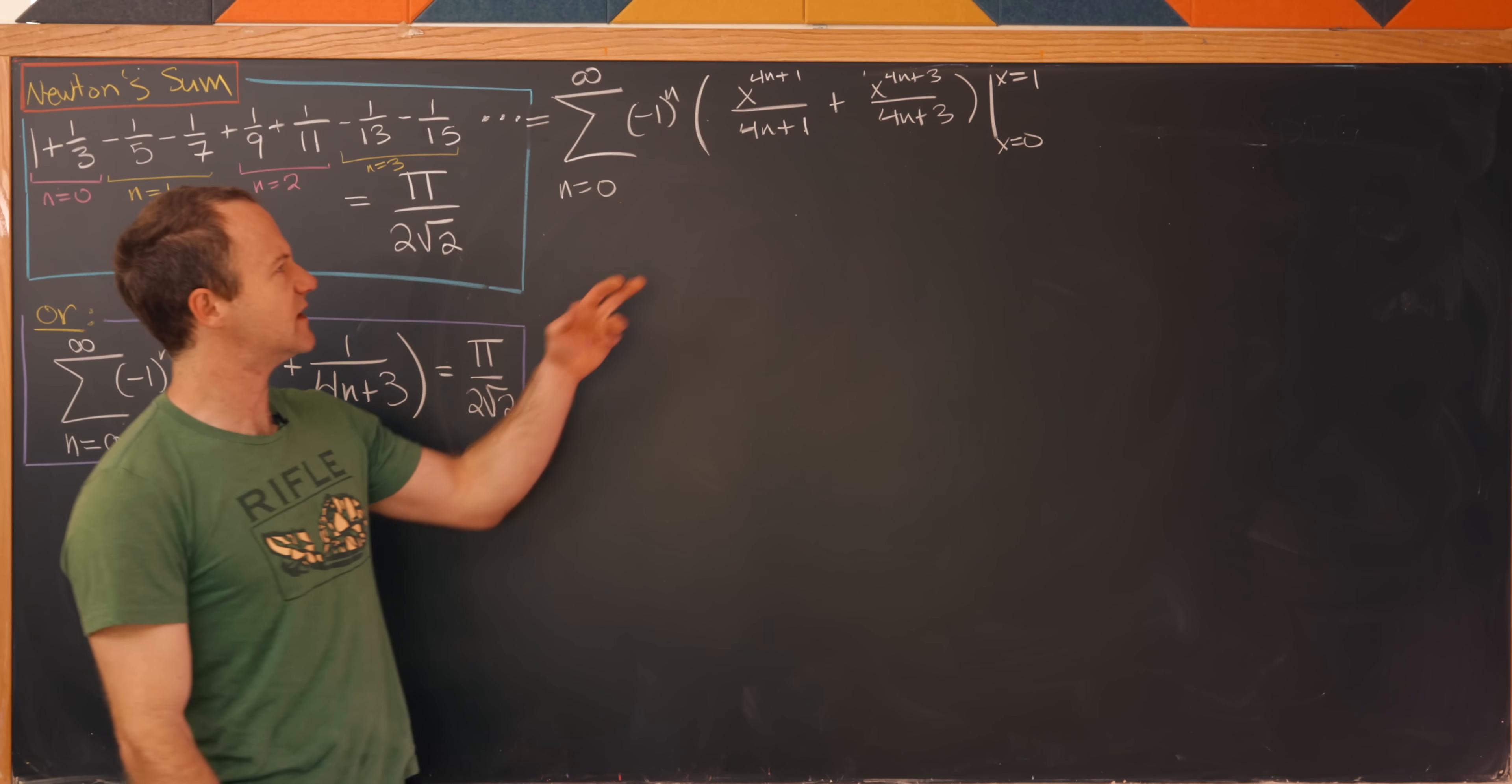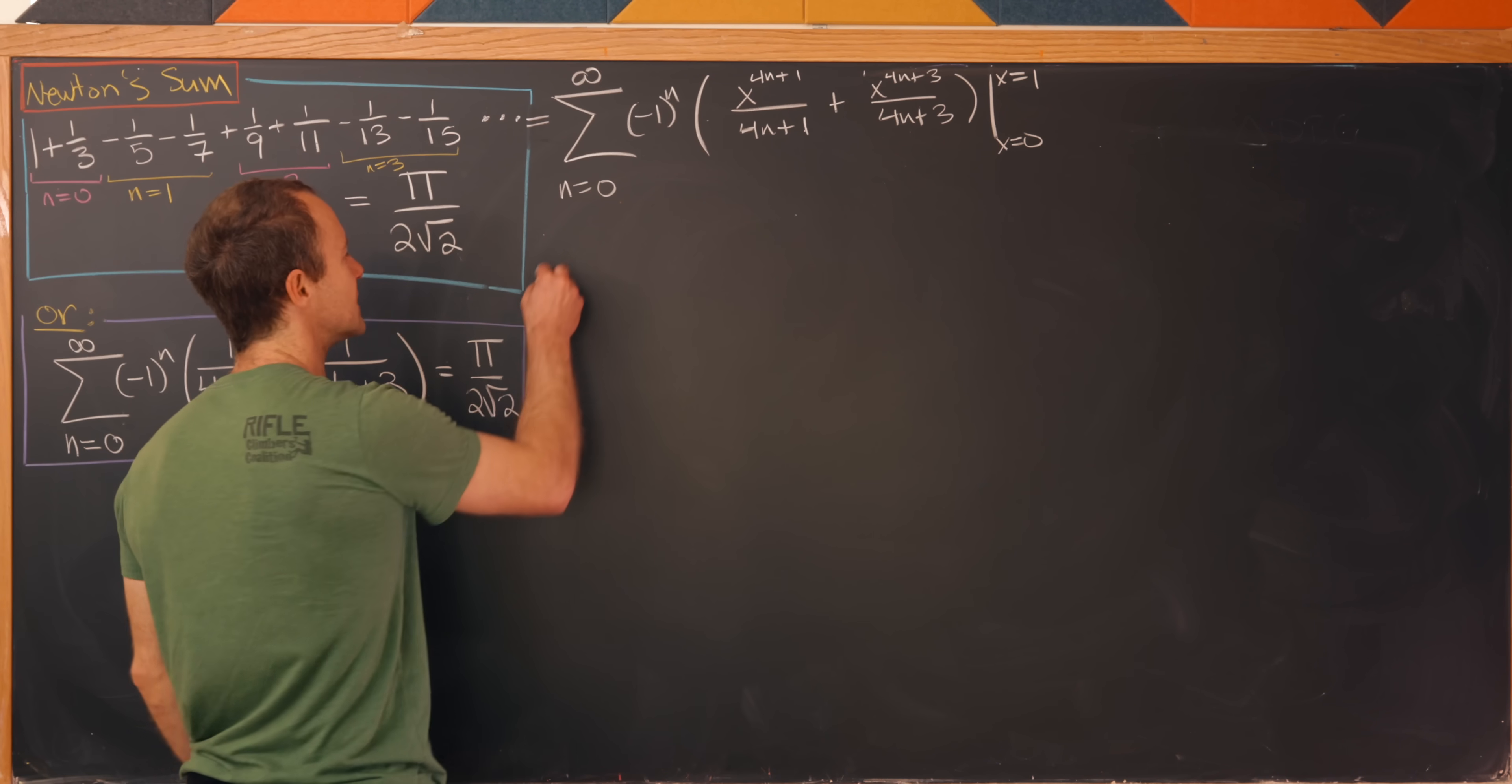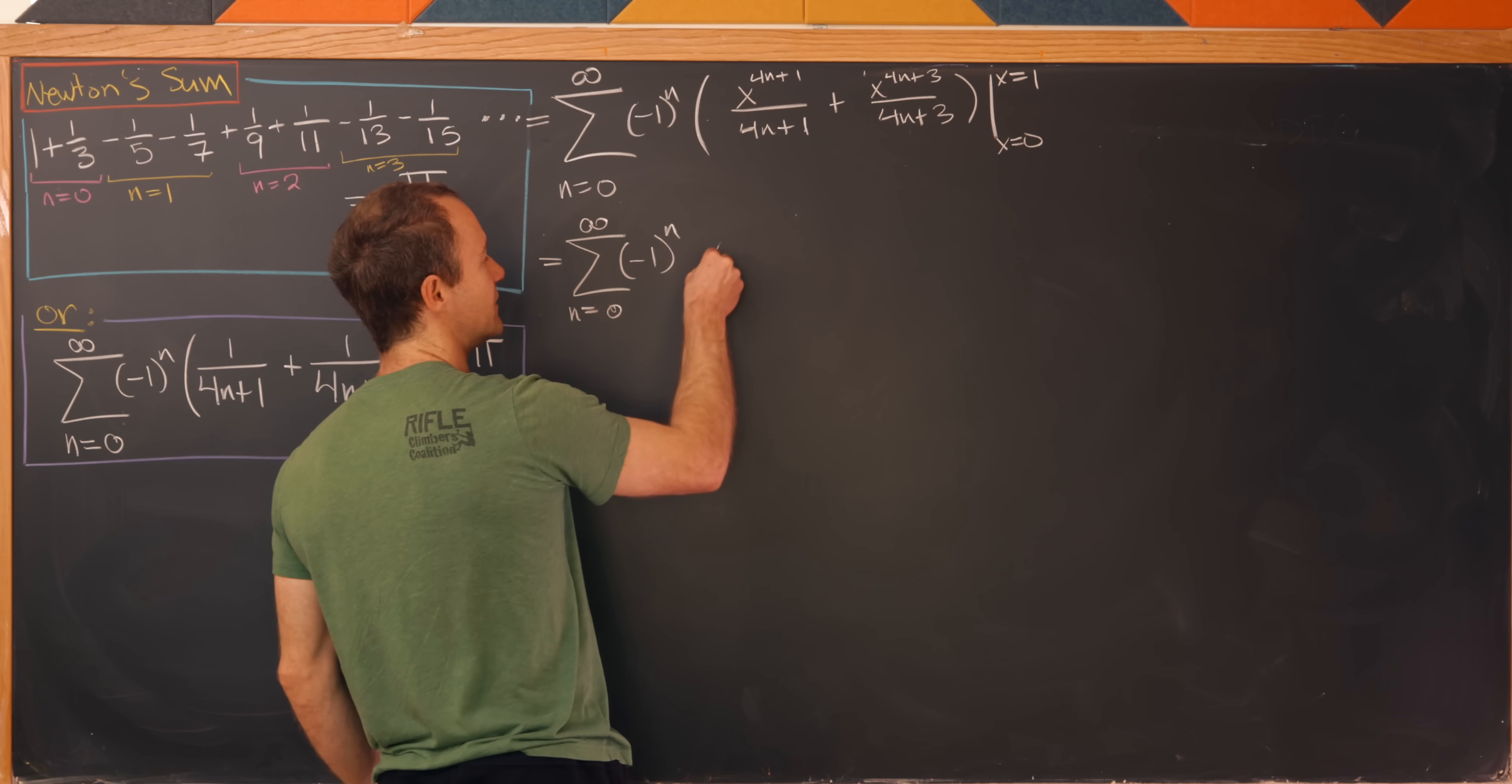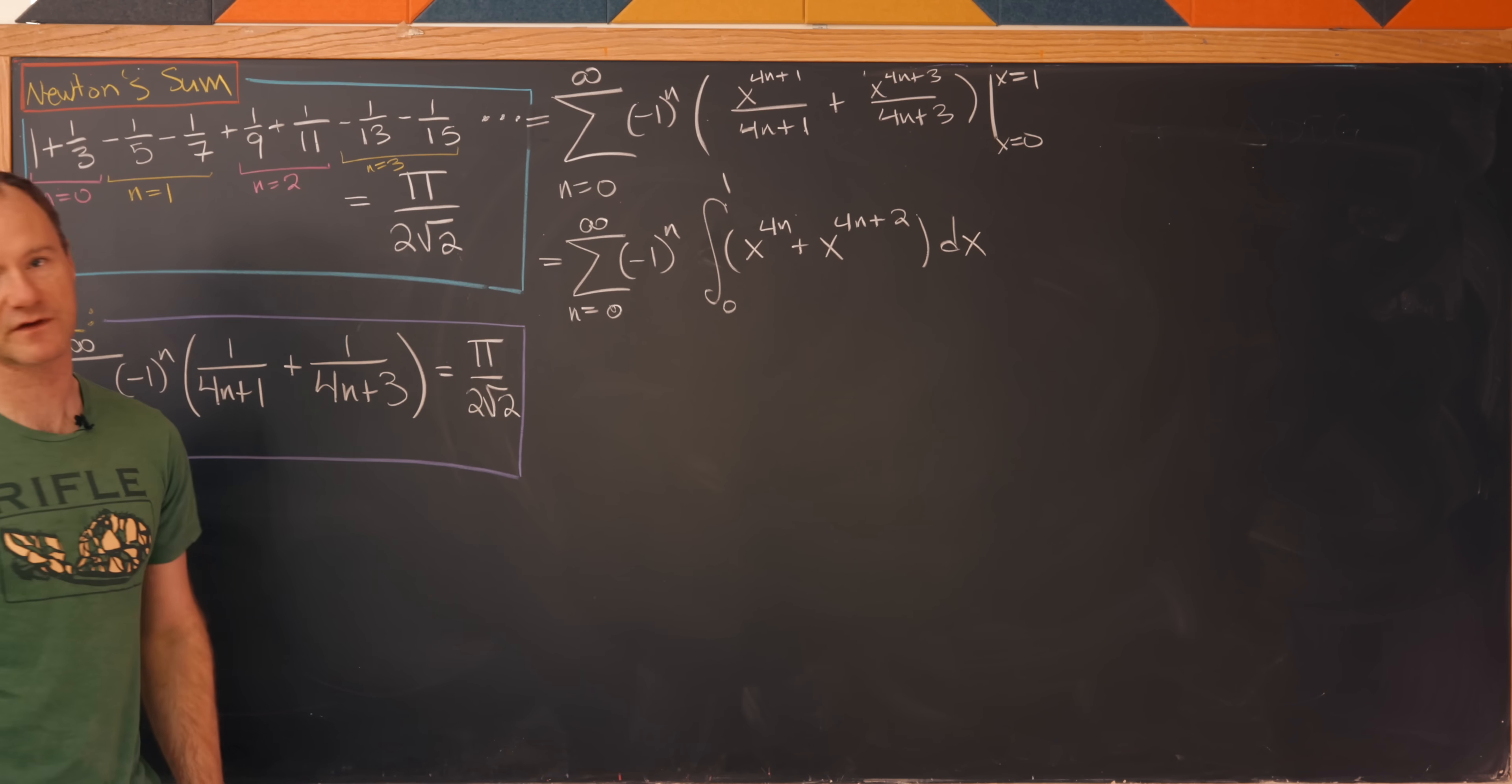But now notice that this looks like an evaluation of an integral. So I can apply the fundamental theorem of calculus and change this 0th integral to a first integral by taking the derivative. That's going to leave me with the sum as n goes from 0 to infinity. I still have my (-1)^n, and then taking the derivative of these two terms gives me x^(4n) plus x^(4n+2). But then taking the derivative means I need to include an integral again by the fundamental theorem of calculus.